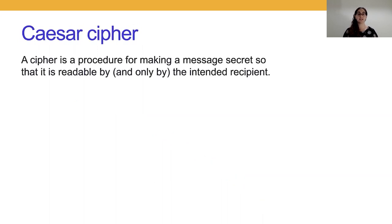A very old solution to this problem is attributed to Julius Caesar. The Caesar cipher is a method of hiding the information that's encoded in our message from the courier, but then revealing the message to the intended source. A cipher is a procedure for making a message secret so that it is readable by and only by the intended recipient. Let's take an example.